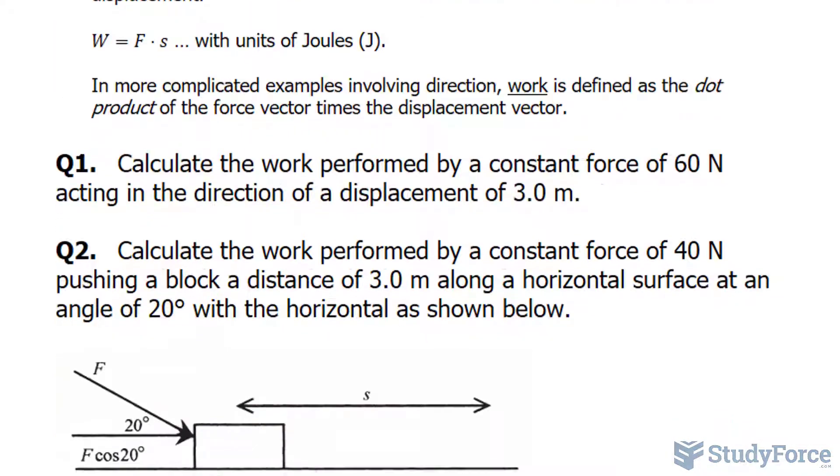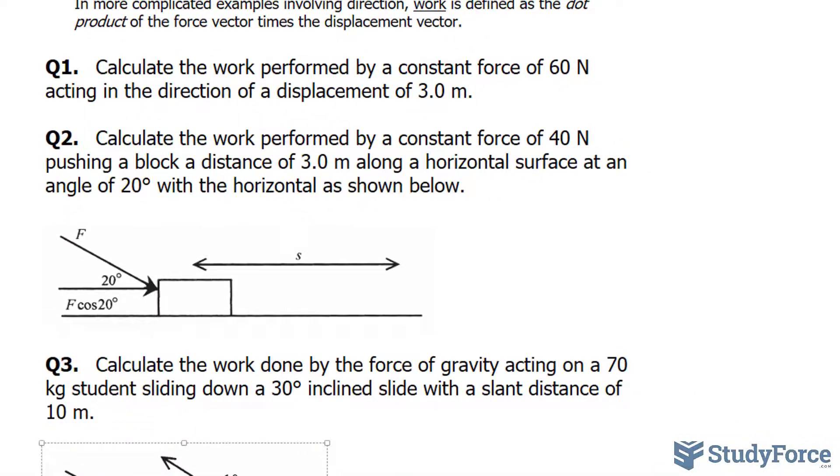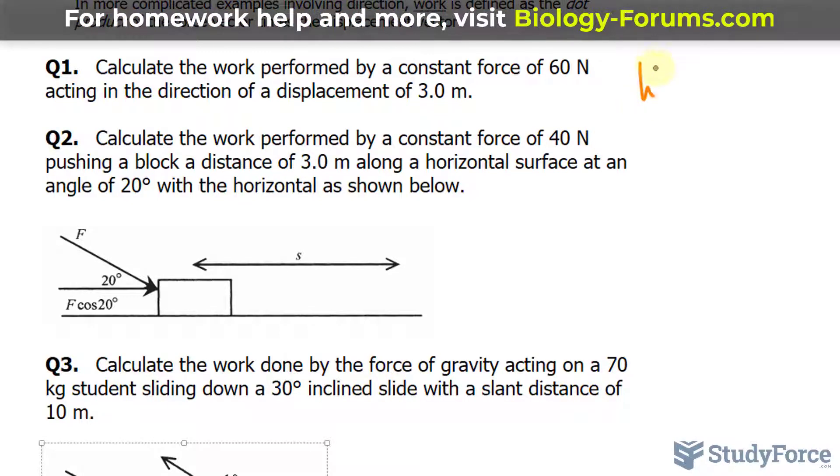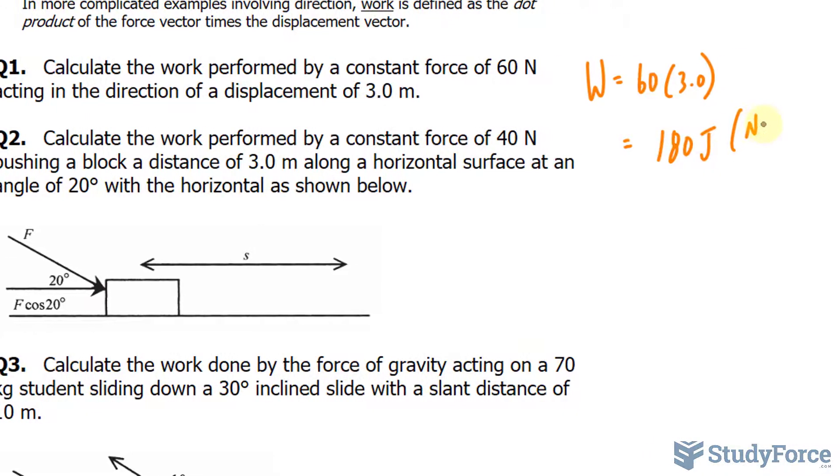Let's begin with the easiest example. In question number one, calculate the work performed by a constant force of 60 newtons acting in the direction of a displacement of 3.0 meters. In this example the force is being exerted in the direction of the displacement, so work equals 60 newtons times 3.0 meters. 60 times 3.0 makes 180 joules or newton-meters.